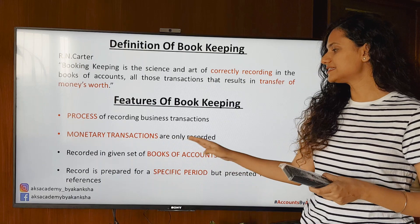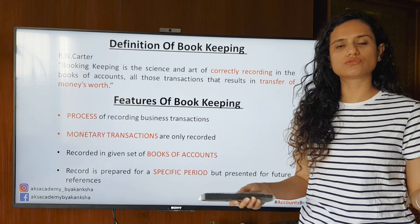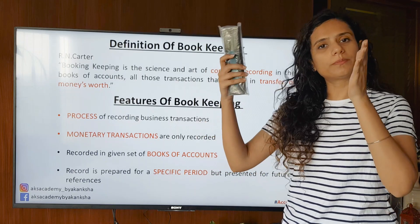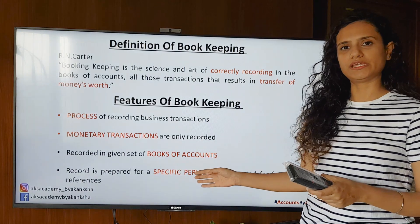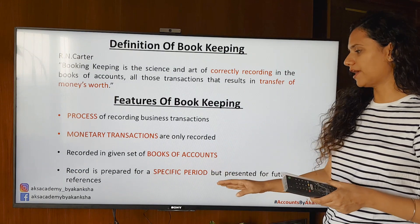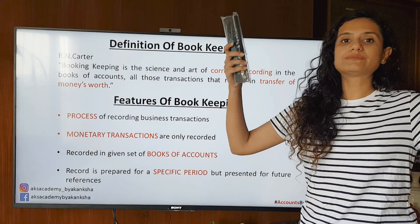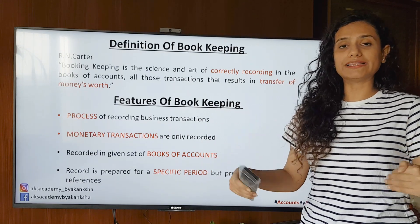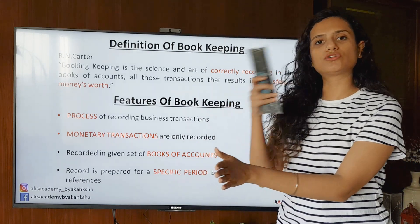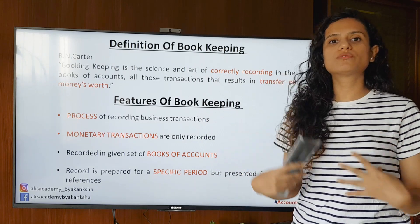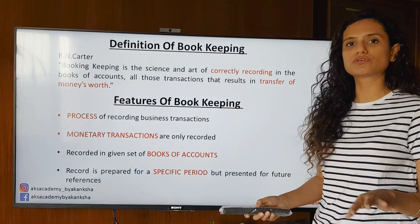The next feature is that transactions are recorded in a given set of books of accounts. There are multiple books of accounts — for sales you create a sales book, for purchases you create a purchase book. You categorize transactions into different books of accounts. Finally, records are prepared for a specified period but kept for future reference. We follow a financial year from 1st April to 31st March, which is the specified period for preparing books of accounts.